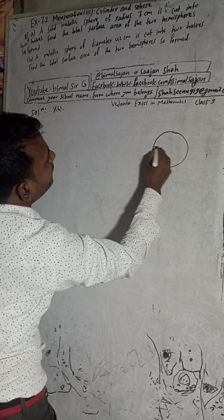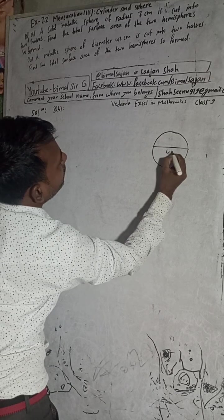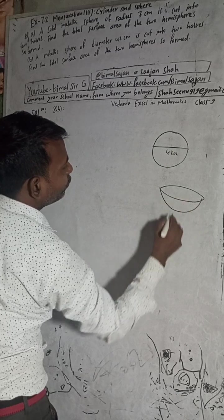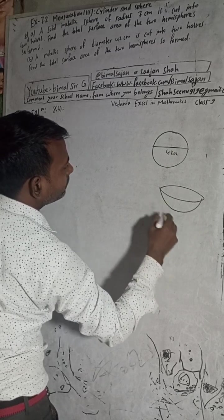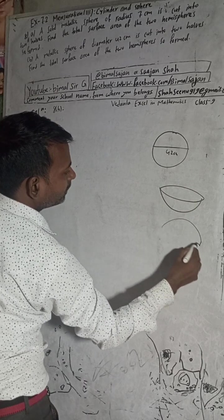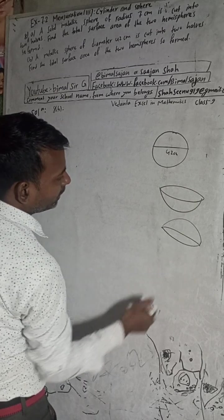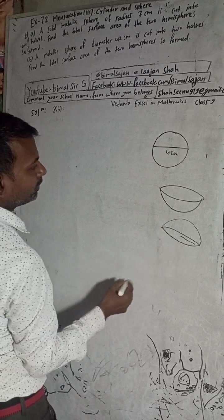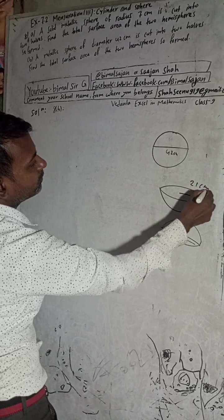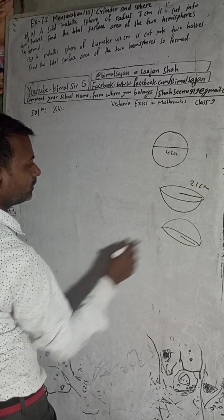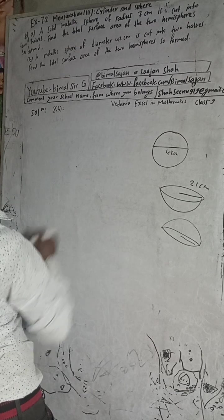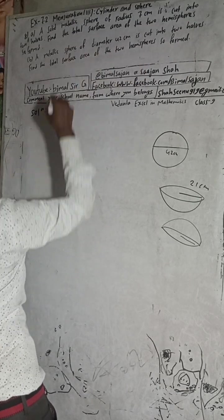The diameter is 42 cm. So when this is cut into two halves, two hemispheres will form - one this part and one this part. The diameter is 42 cm, which means the radius will be half of that, which is 21 cm.